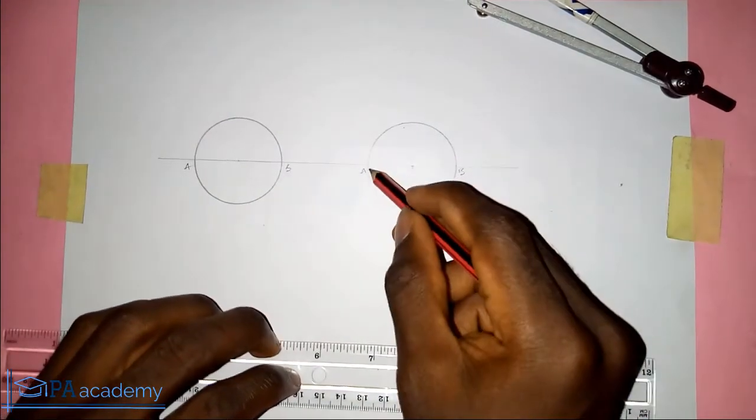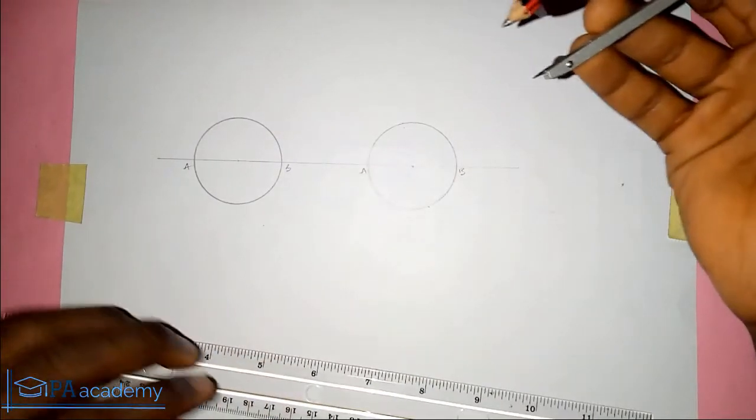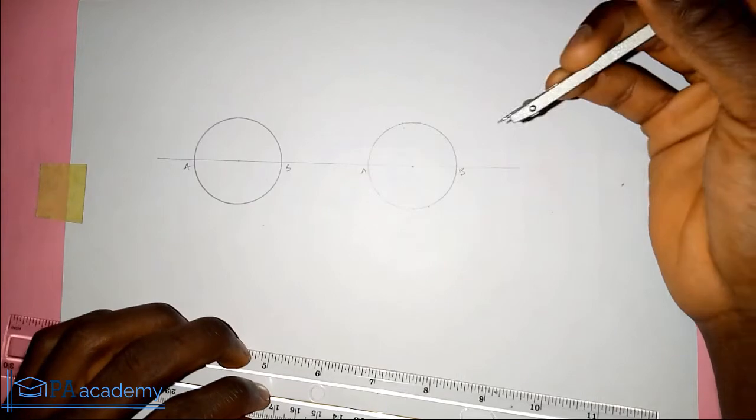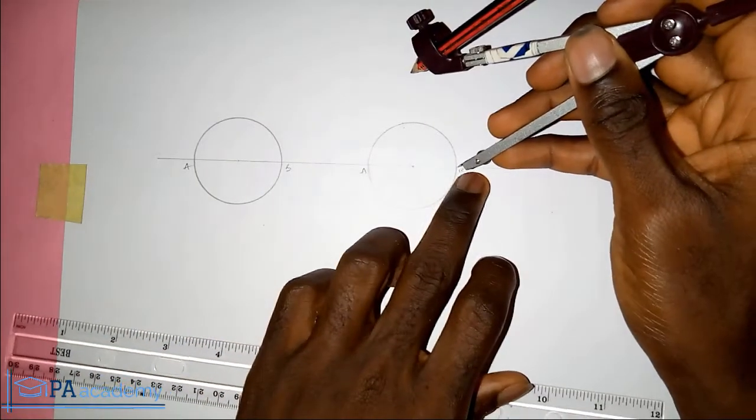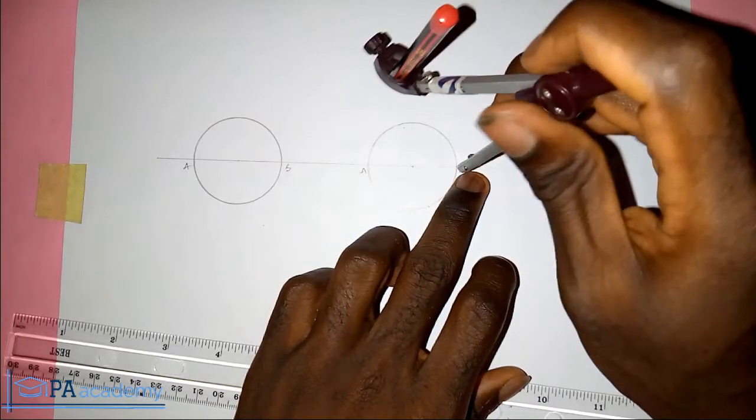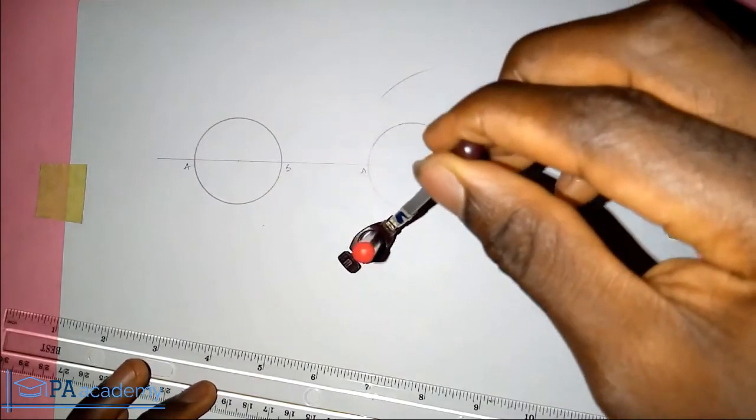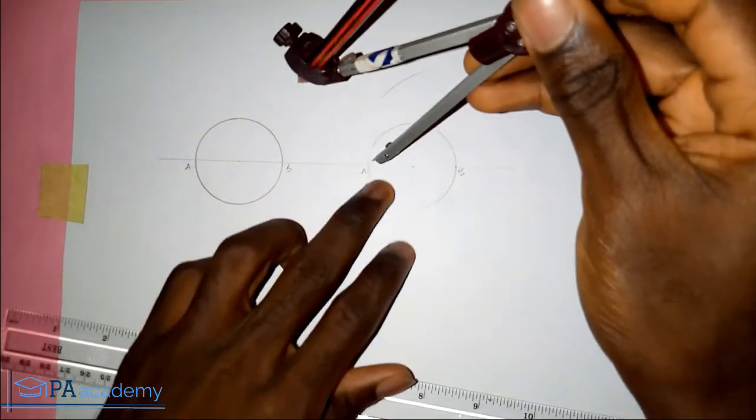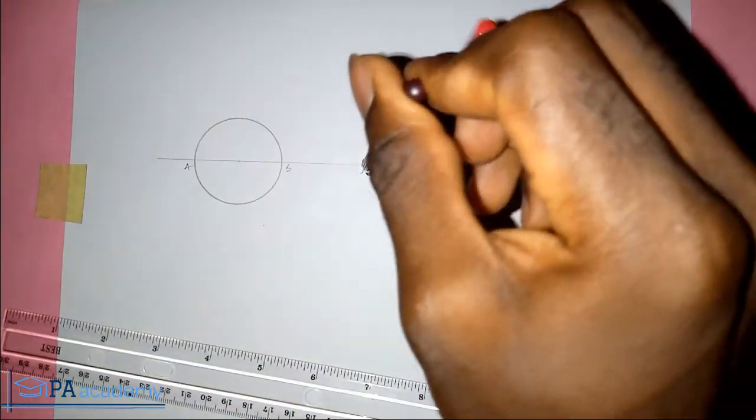The next thing for us is to bisect point A and point B. So you bring back your compass, I'm trying to use a convenient length. So from point B you draw an arc to the top and another one downwards, from point A an arc.